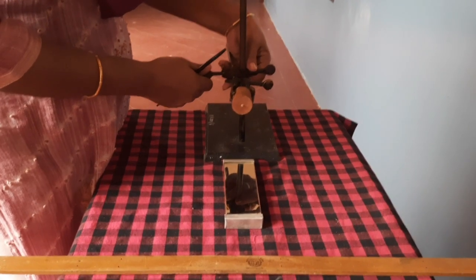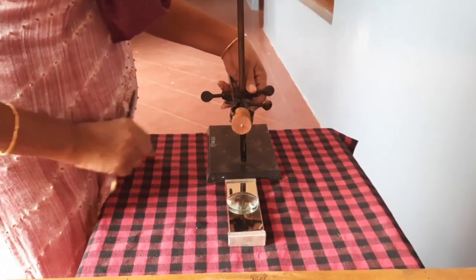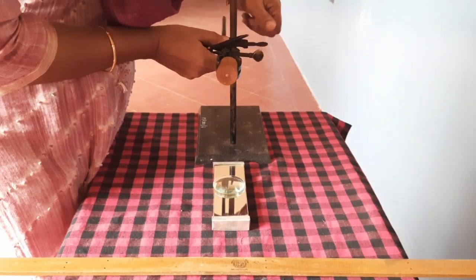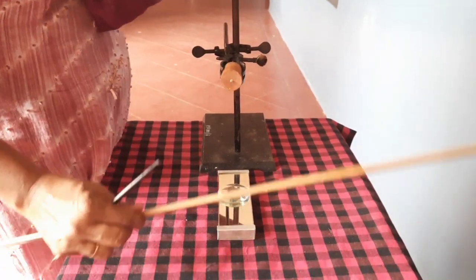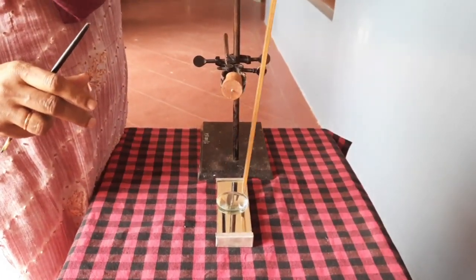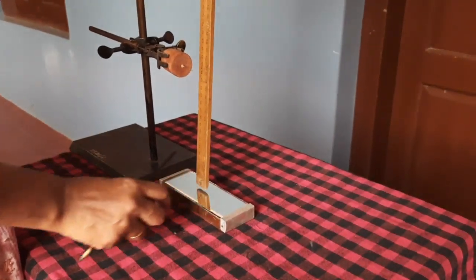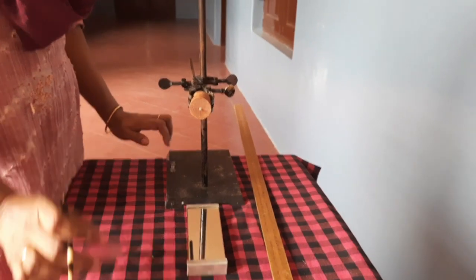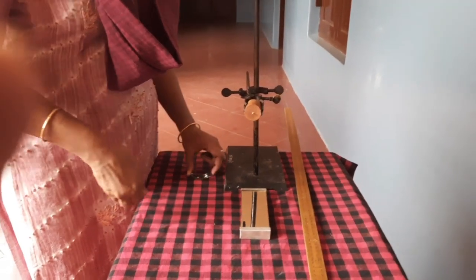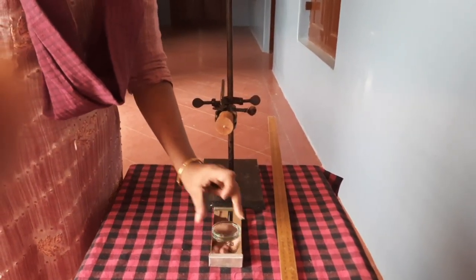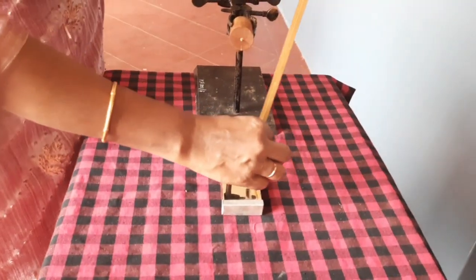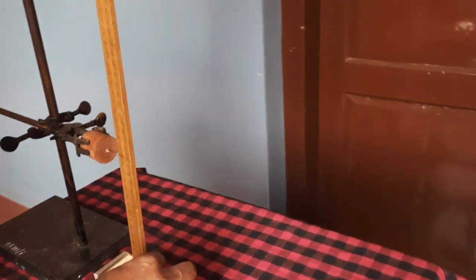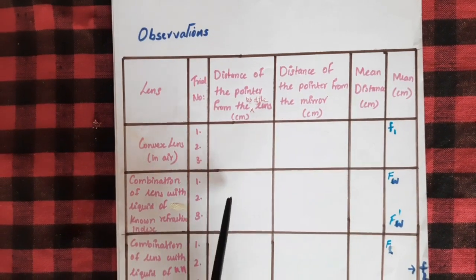Coming to the experimental setup: we will keep the lens over the mirror and adjust the position of the object to get the image without parallax error. Take the measurement from the top of the lens, then remove the lens and take the measurement from the top of the mirror. These measurements help find the focal length of the convex lens. As the second part, introduce a few drops of water, then place the lens over that, take the measurement from the top of the lens, and then from the top of the mirror after removing the lens — these give the combination focal length.